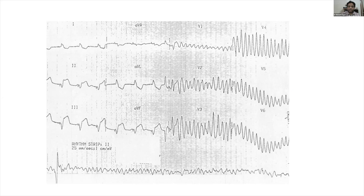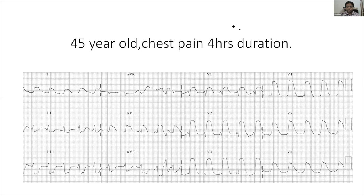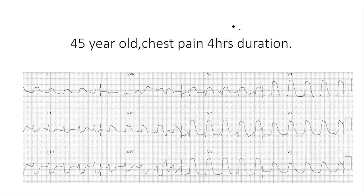Here's a story the ECG told — a very sad story: an ST elevation MI breaking down into ventricular fibrillation. So we have 10 cases. Patient zero is a case I did a 10-minute CME for. It's a simple one: 45-year-old with chest pain of four hours duration. Some candidates said anterior wall MI, others said LBBB. Does everyone agree it's an anterior MI?